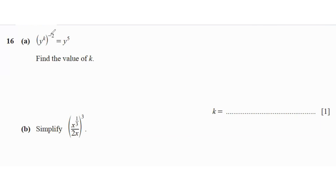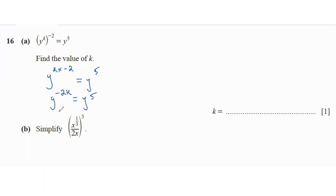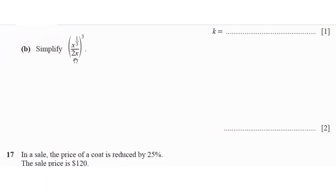To find the value of k, we open the powers. When a power is inside brackets with an exponent outside, we multiply them. So k times negative 2 equals y to the power of 5, giving negative 2k. Since we have similar bases on both sides, we set the powers equal: negative 2k equals 5, so k equals 5 over negative 2.